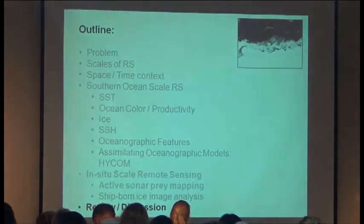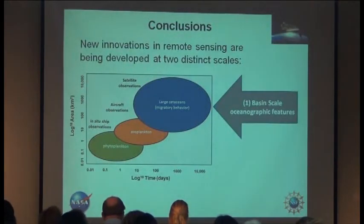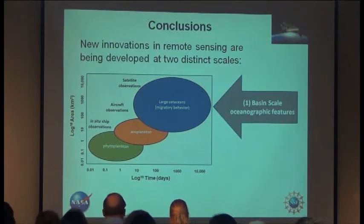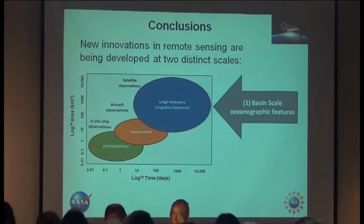Just to wrap up: we have a lot of really well-defined products now being developed for remote sensing at the ocean basin scale, and it's getting better all the time. We're increasingly developing long-term archives of imagery and creating better algorithms for extracting information at that ocean basin scale.